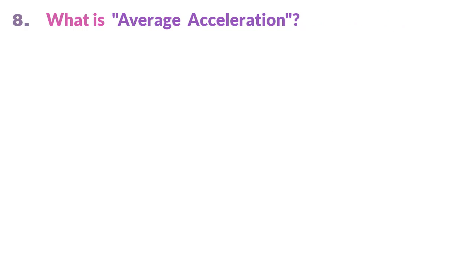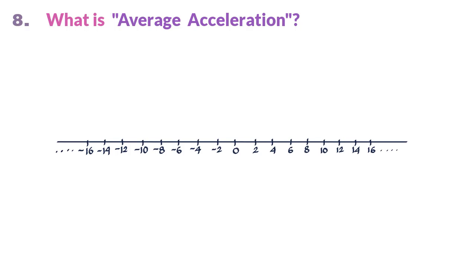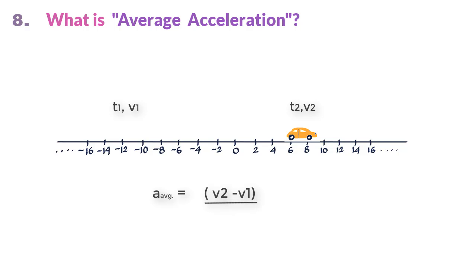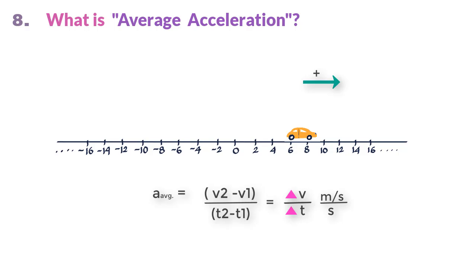What is average acceleration? If the velocity of a particle changes with time, it is accelerating. If velocity at time t_1 is v_1 and at time t_2 is v_2, then average acceleration a_average equals (v_2 minus v_1) divided by (t_2 minus t_1), which equals delta v divided by delta t. Acceleration is the rate of change of velocity — how much velocity changes every second. A positive value of acceleration indicates the positive x direction; a negative value indicates the negative x direction.